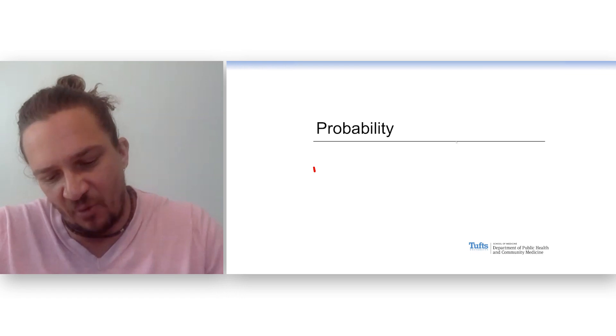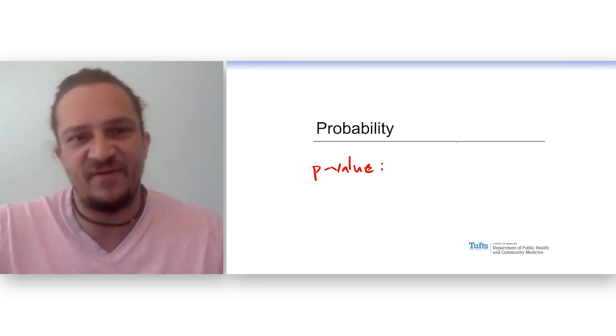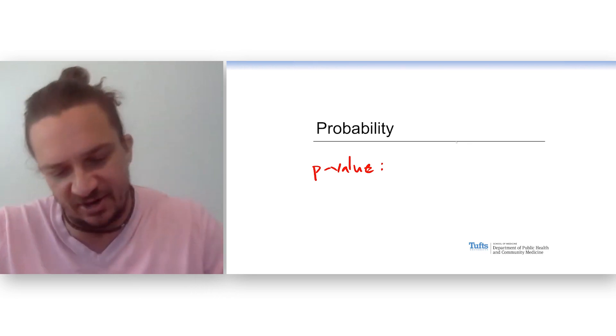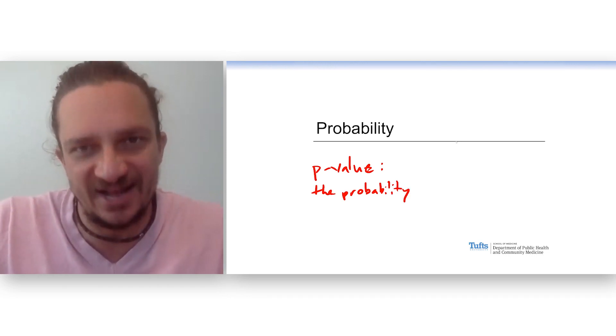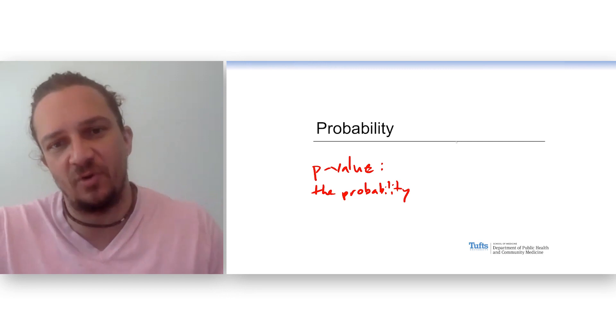Probability is important because when we learn the definition of a p-value, the first word is going to be the probability. We're going to go over this again and again. You will memorize this whether you want to or not.